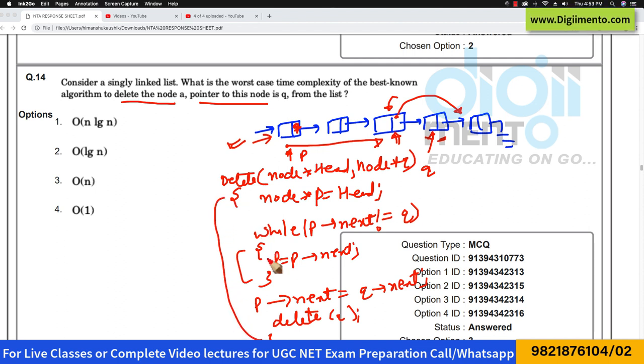And this while loop is going to take order of n time in worst case, and this deletion operation is going to take order of one time. So to perform this deletion of this node which is pointed by Q, it is going to take order of n as a time complexity.